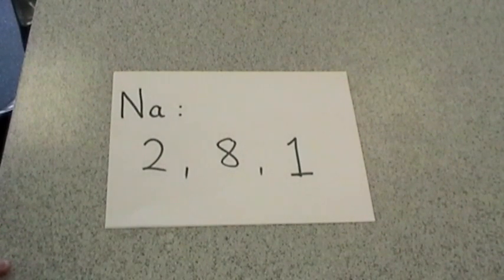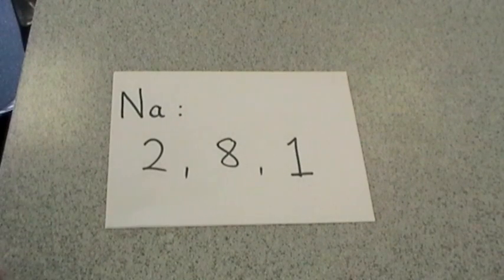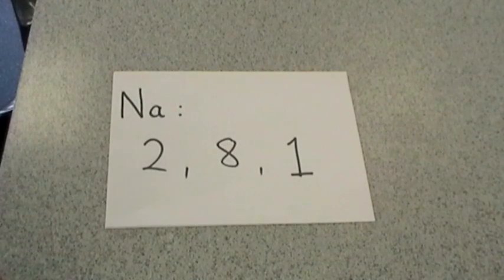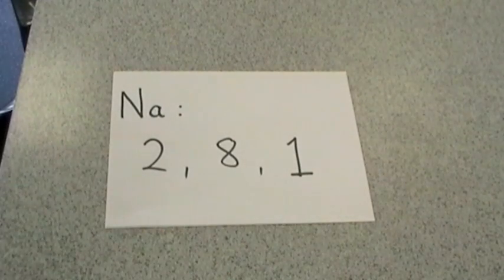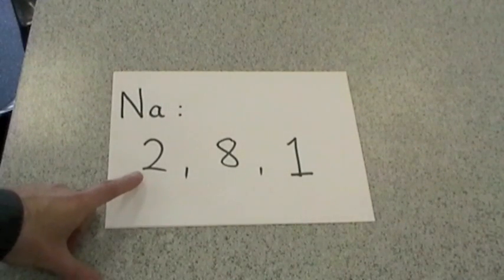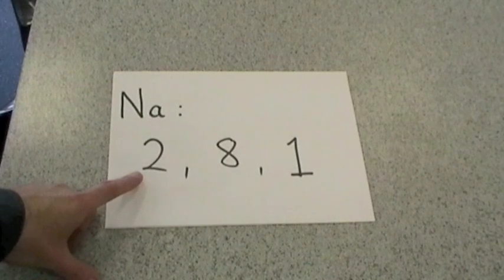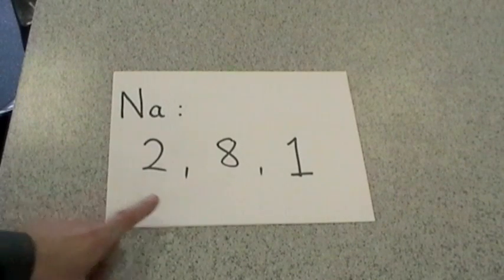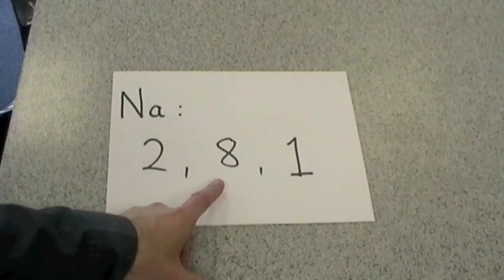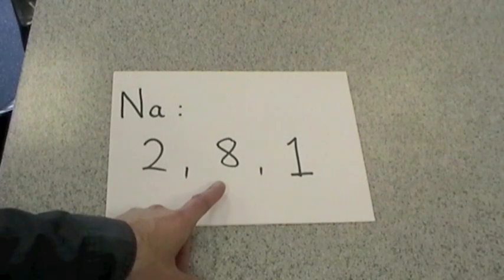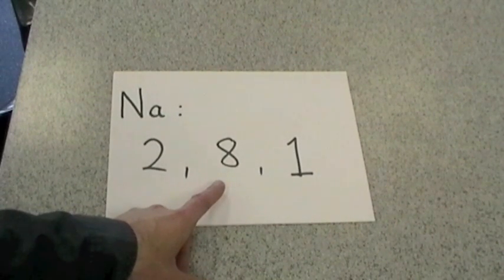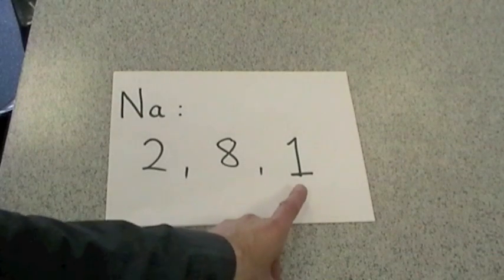So for sodium, with its 11 electrons, it has an electronic configuration of 2, 8, 1, meaning that 2 electrons live in the inner first shell, and then that's full. So we move into the second shell, and we put 8 electrons into there, and that's full now, so the 11th electron goes into the third shell.